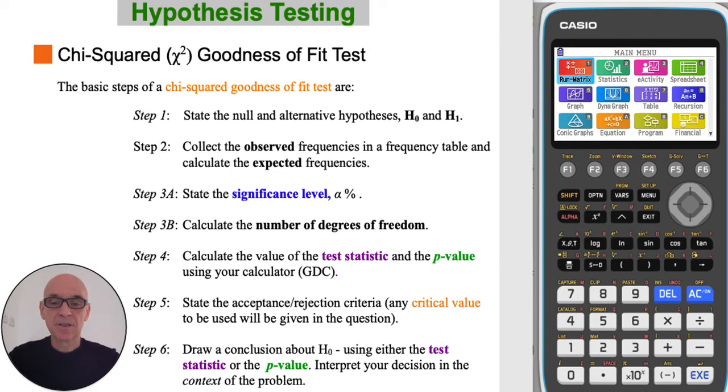Step 4 to calculate the value of the test statistic and the p-value, step 5 to state the acceptance and rejection criteria, and step 6 to draw or make a conclusion using either the test statistic or the p-value.